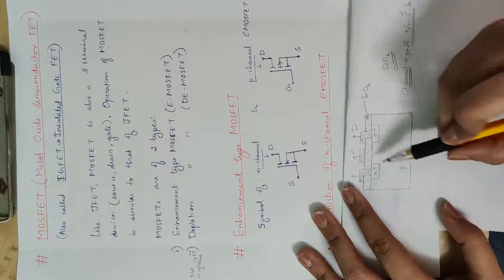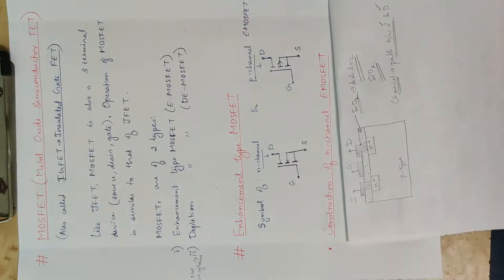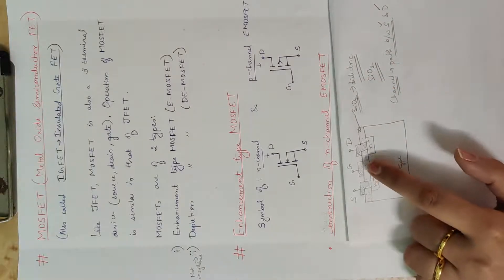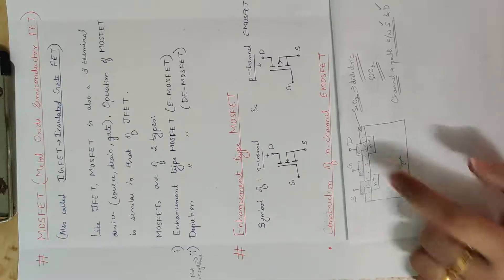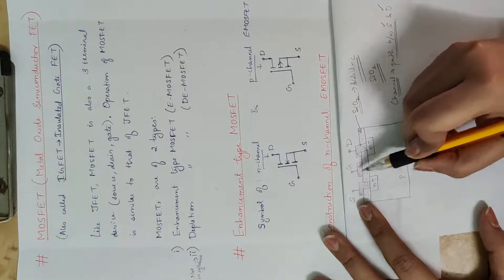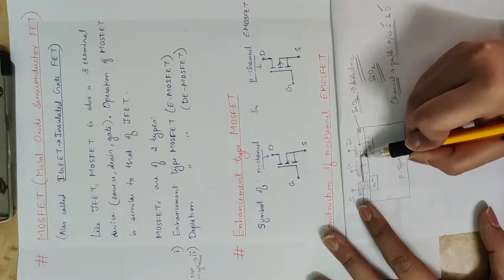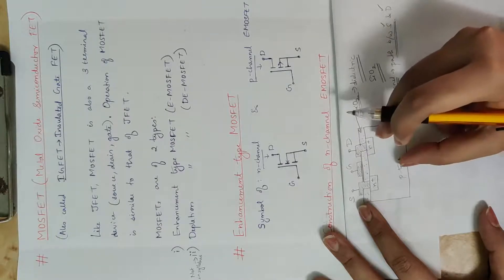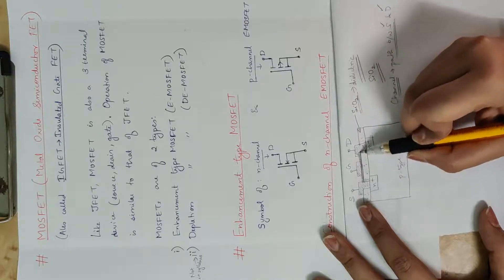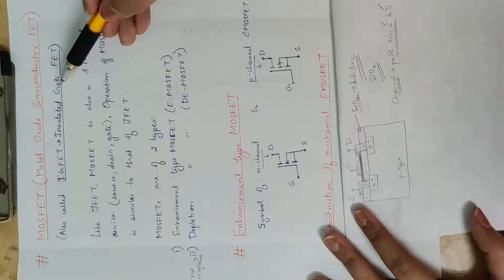The silicon dioxide is a dielectric material. Dielectric material is not a conductor — it is insulated. Therefore, no current flows through the gate directly. The gate is insulated from the body. This is why MOSFET is also known as Insulated Gate FET, or IGFET.